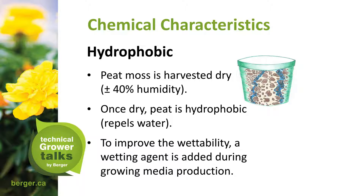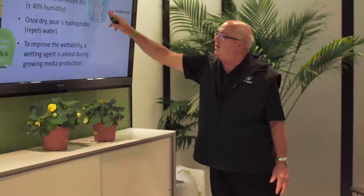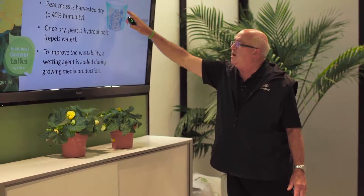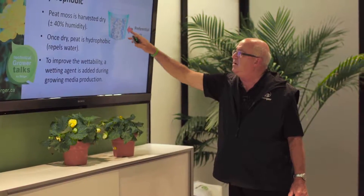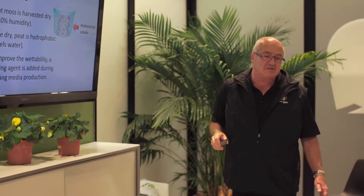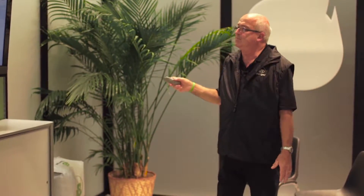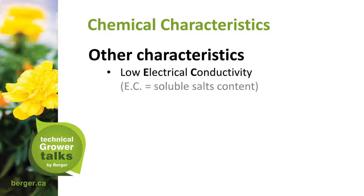Without the proper wetting agent, you get channeling — all the water you put in finds the least path of resistance and leaves, so roots don't have much root surface area to accomplish water uptake.